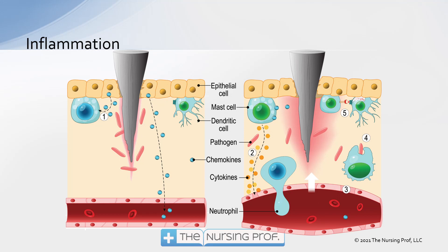We have three things happen. First, vasodilation — you can see in the picture on the right that the capillary has gotten very big. Second, capillary permeability. We need to get all of these substances — cytokines, neutrophils, mast cells — out to the tissue so it can fight off those pathogens and help heal the wound. To do that, we need vasodilation first to get more blood to the area, then capillary permeability so everything can get out. The third component is clotting, so the patient doesn't bleed to death from that little splinter.